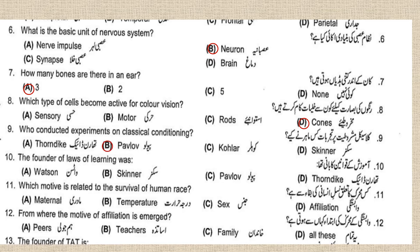Number nine: who conducted experiments on classical conditioning? Ivan Pavlov is the first one who conducted experiments on classical conditioning. Number ten: the founder of the laws of learning was Thorndike.